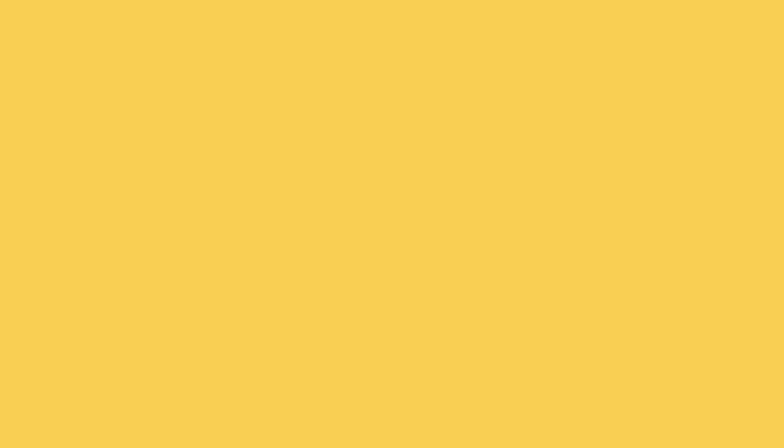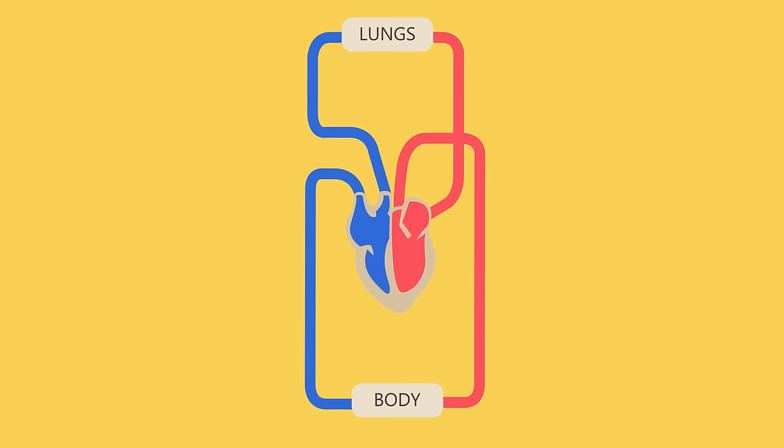Much like a school bus, with oxygen and carbon dioxide being able to hop on or hop off at the correct destinations. This system is actually a double circulatory system made of two circuits: the pulmonary circuit and the systemic circuit.